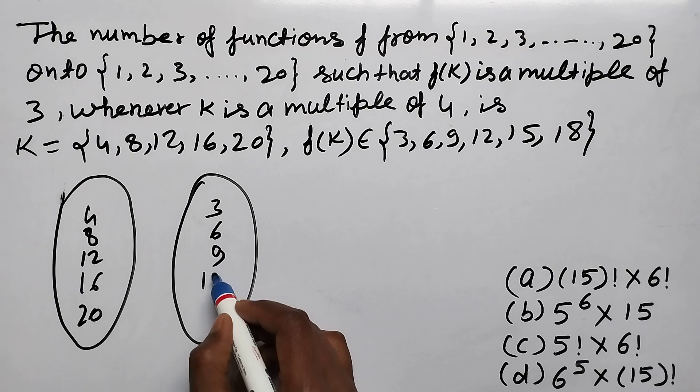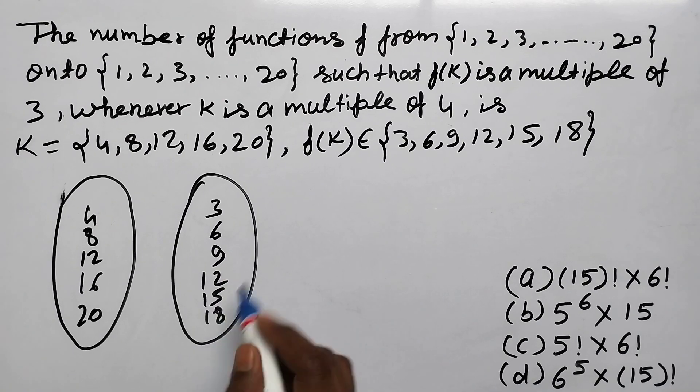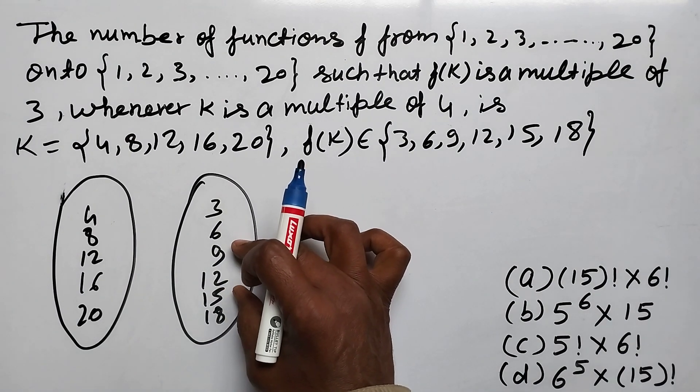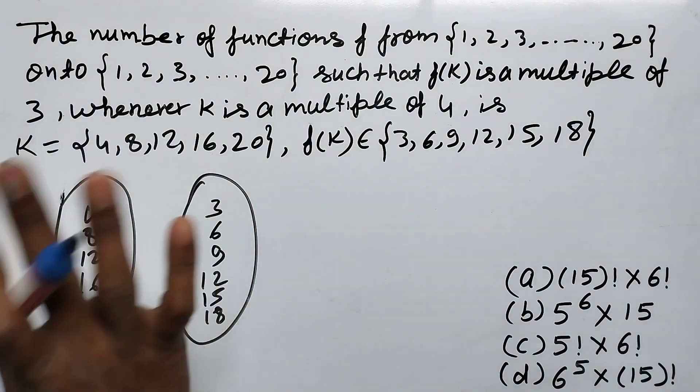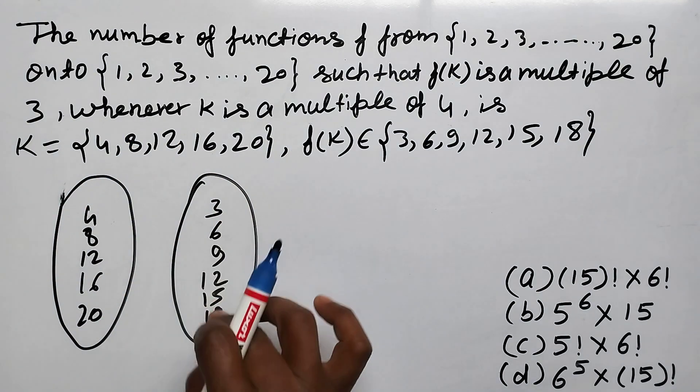and 3, 6, 9, 12, 15, 18. There are elements here and here from 1 to 20.